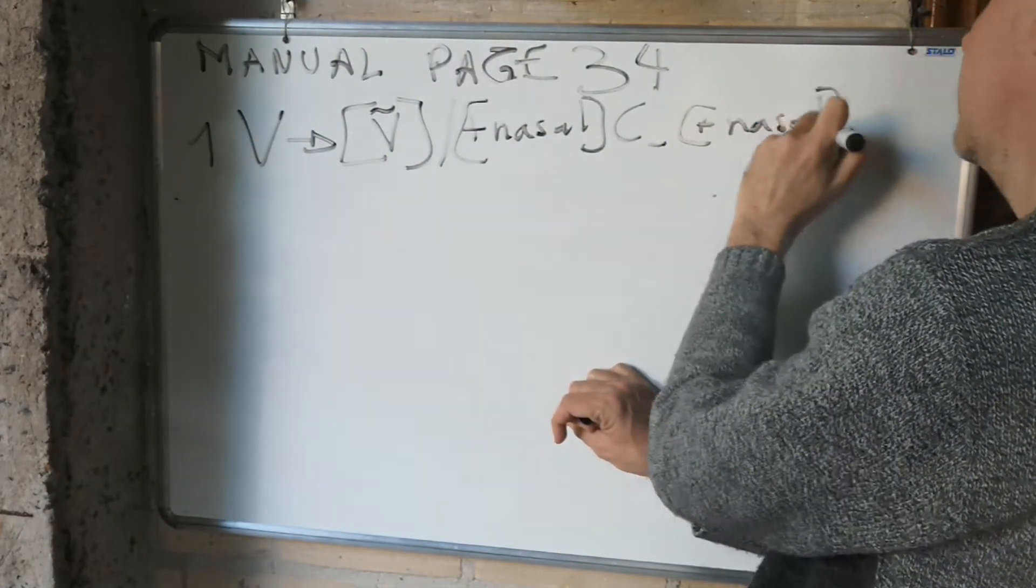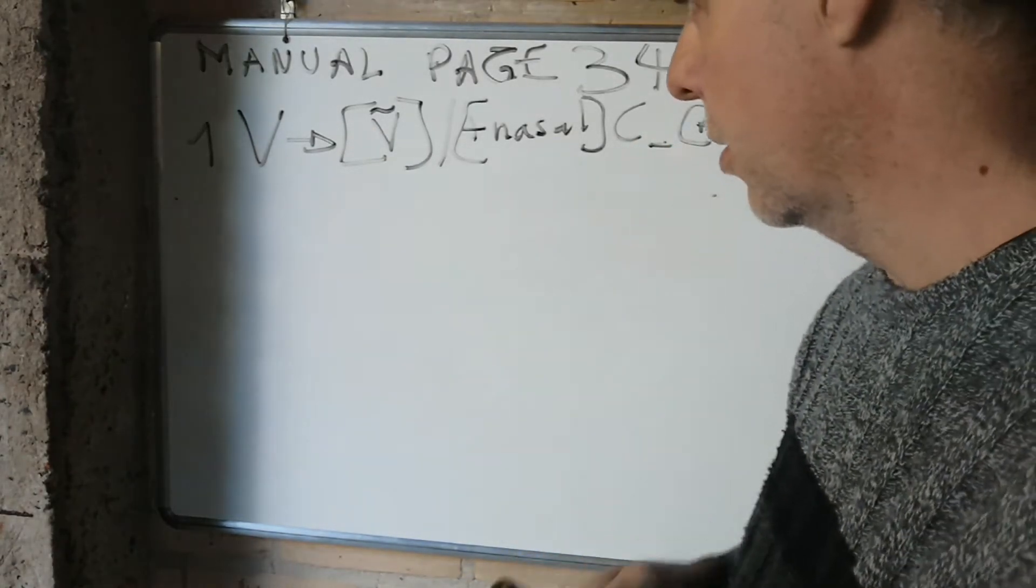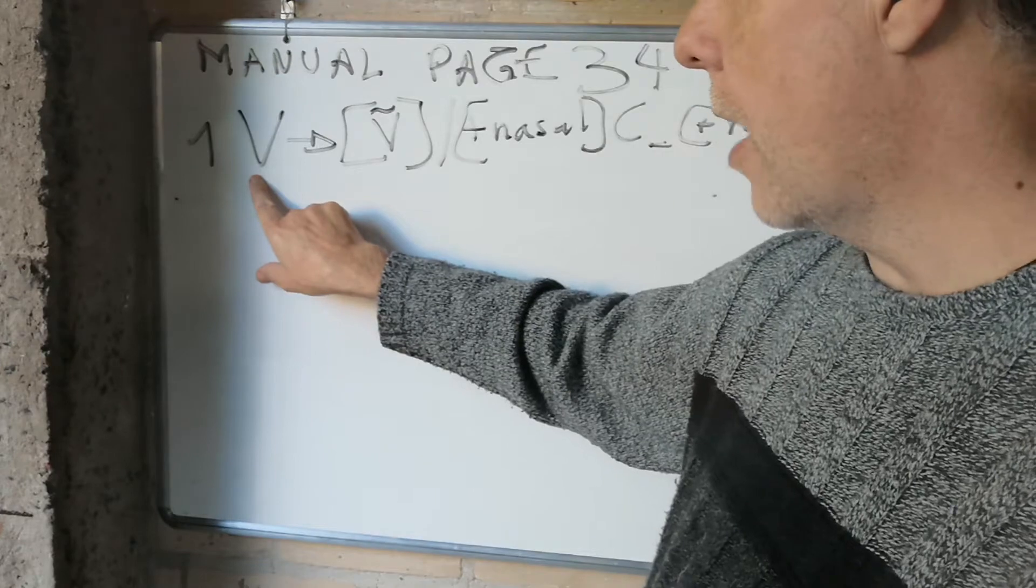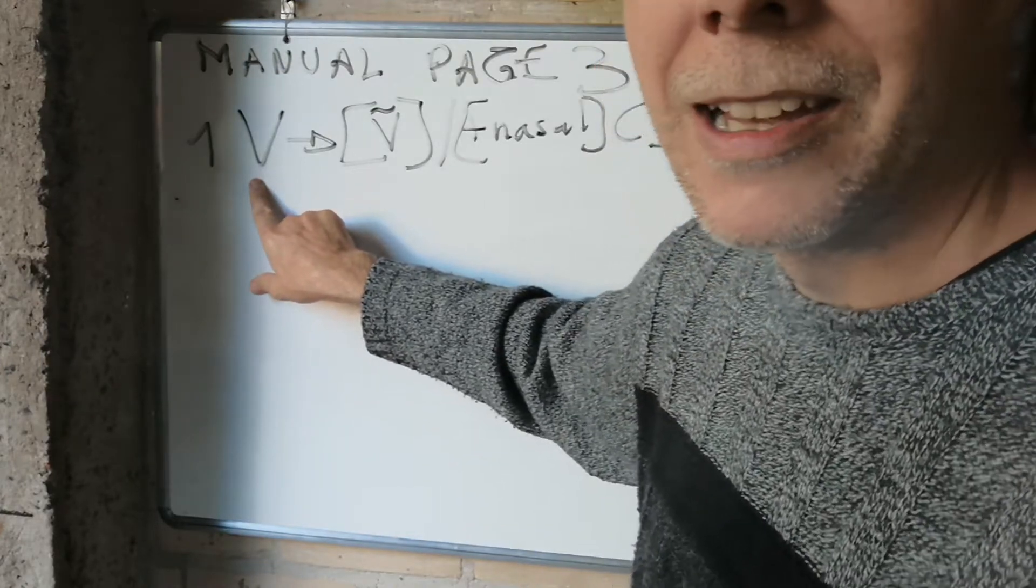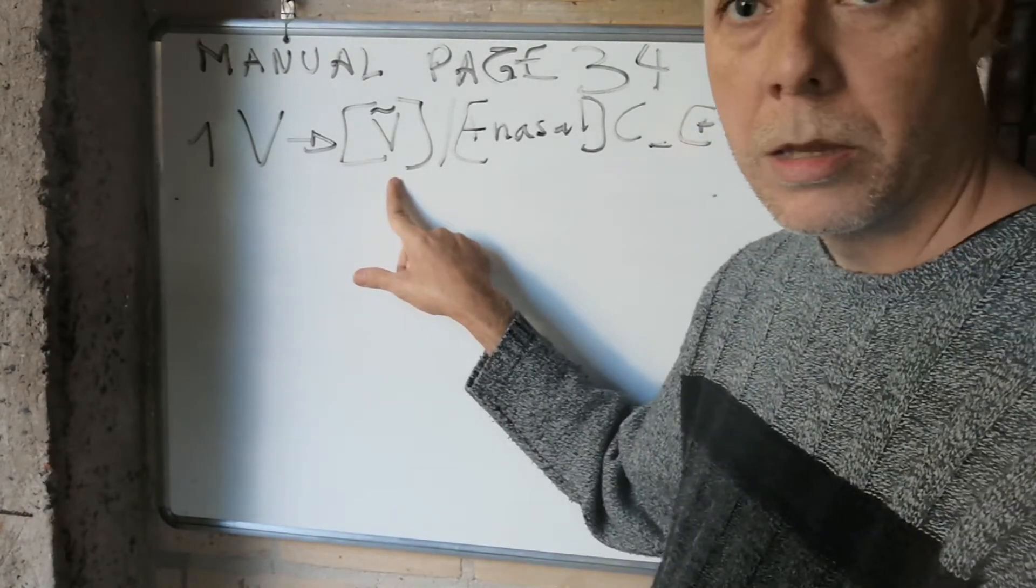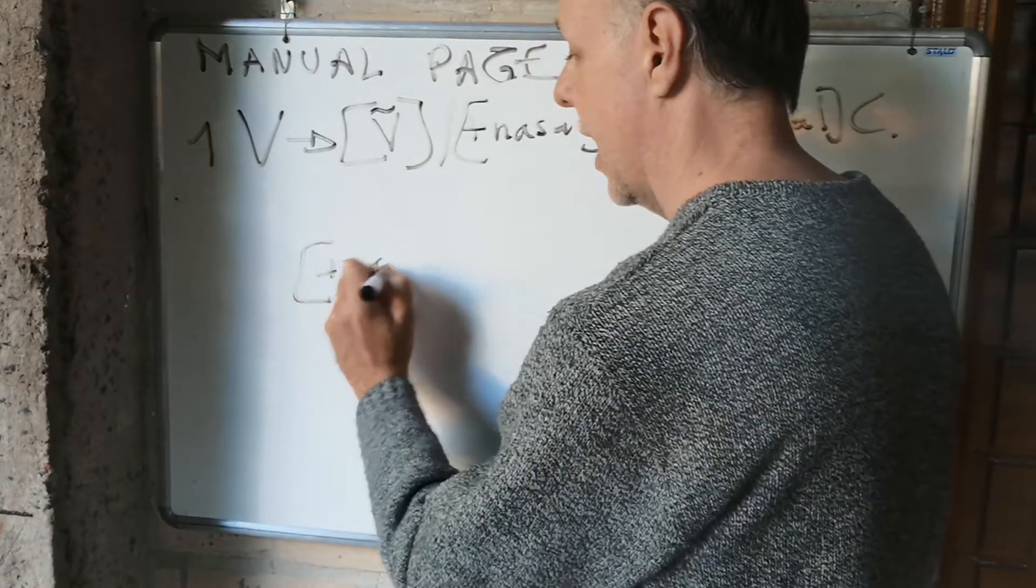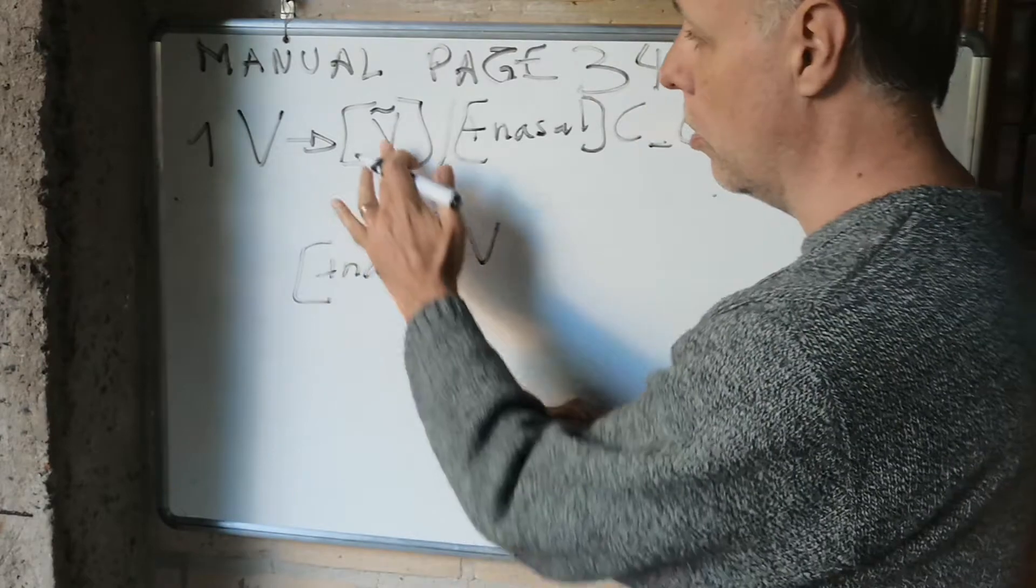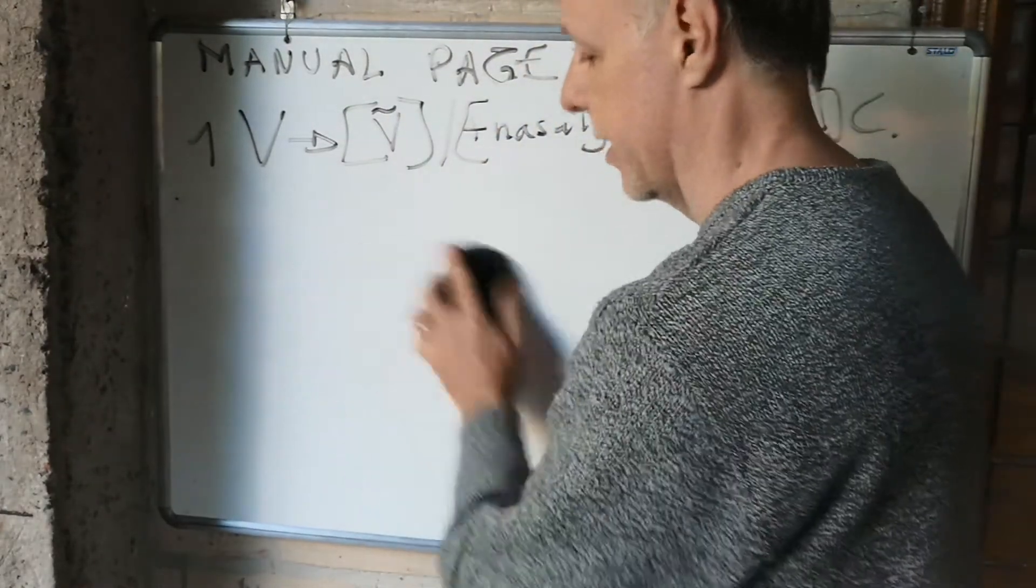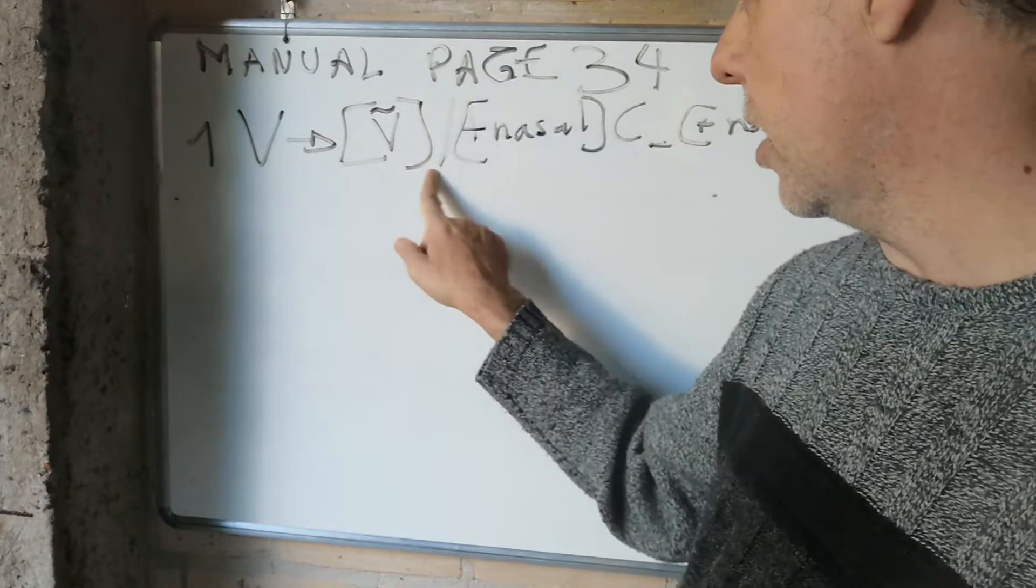How do we read this rule? Let's go one by one. V, a vowel, becomes nasal - the arrow means becomes. You can write either nasal vowel or just nasal. There are many ways of writing it. A vowel becomes nasal in the environment of...